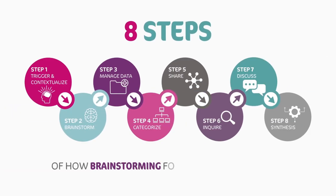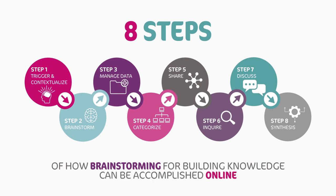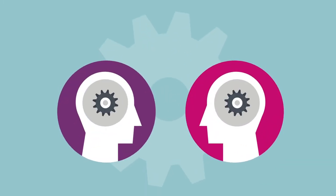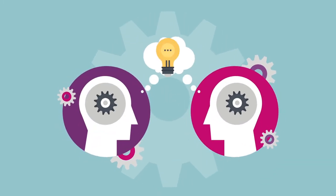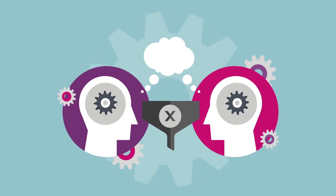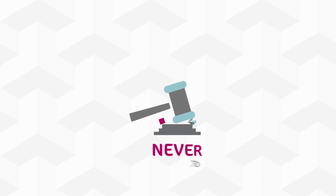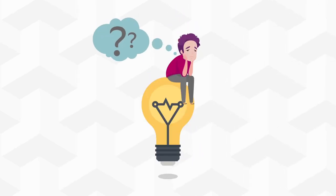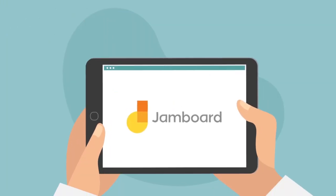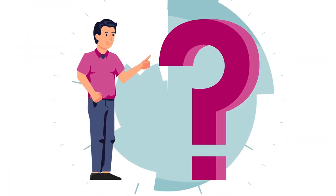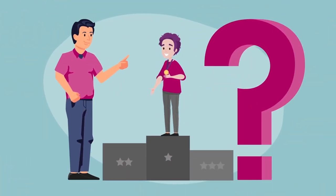Here are the eight steps of how brainstorming for building knowledge can be accomplished online. Step 3: manage data. During a brainstorming session, lots of ideas are shared. In this third step, we teach students how to filter the ideas that relate from those that don't. From the start, remember never to judge — it blocks the students' thinking process and sets doubt in them. Instead, ask your students questions that guide them to reaching that conclusion on their own.